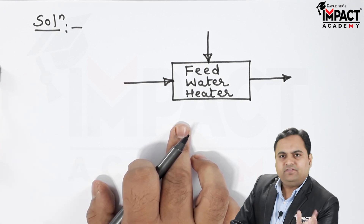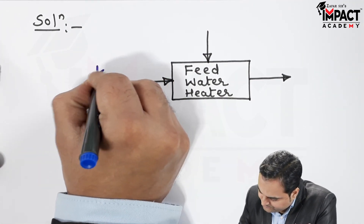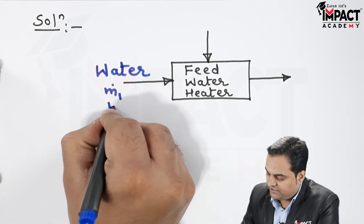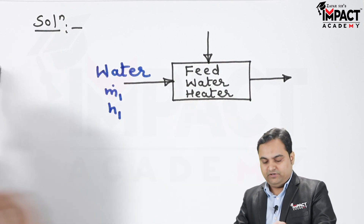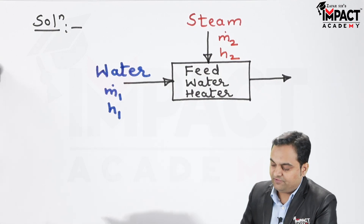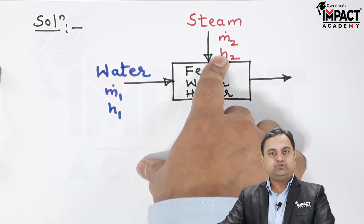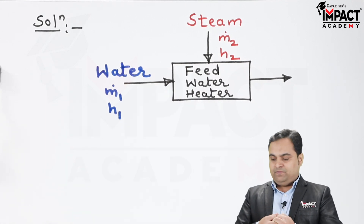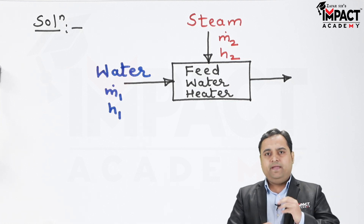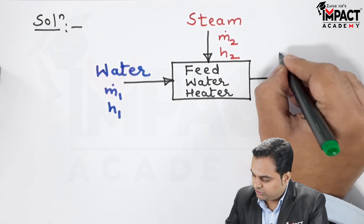The feed water heater is of direct mixing type. At one end, water enters with mass flow rate M_dot1 and specific enthalpy H1. At the same time, steam enters with mass flow rate M_dot2 and specific enthalpy H2. The water is at a lower temperature and lower enthalpy compared to steam. Because of direct mixing, the heat energy of the steam is transferred to the water, and at the exit we get hot water at a much greater enthalpy and temperature.